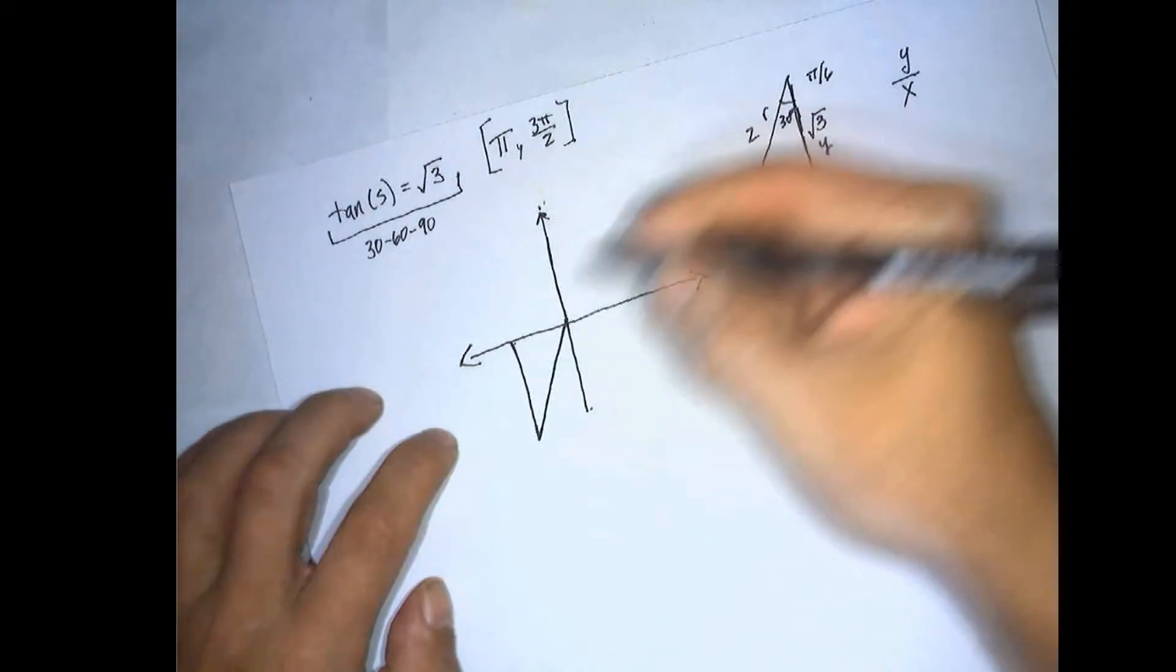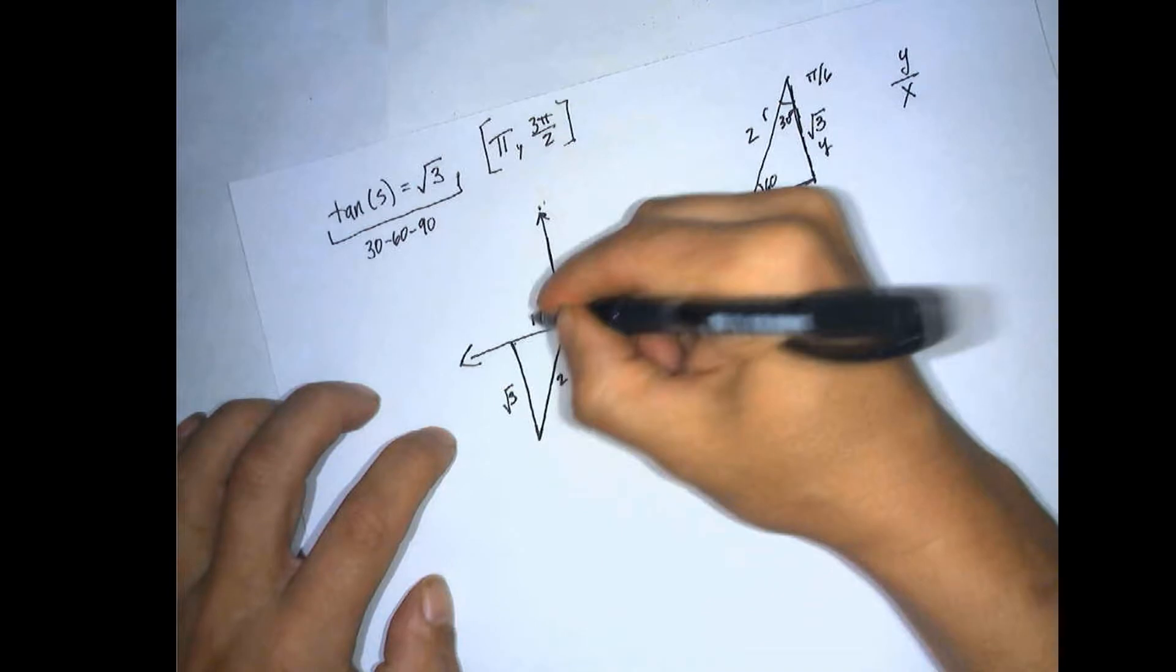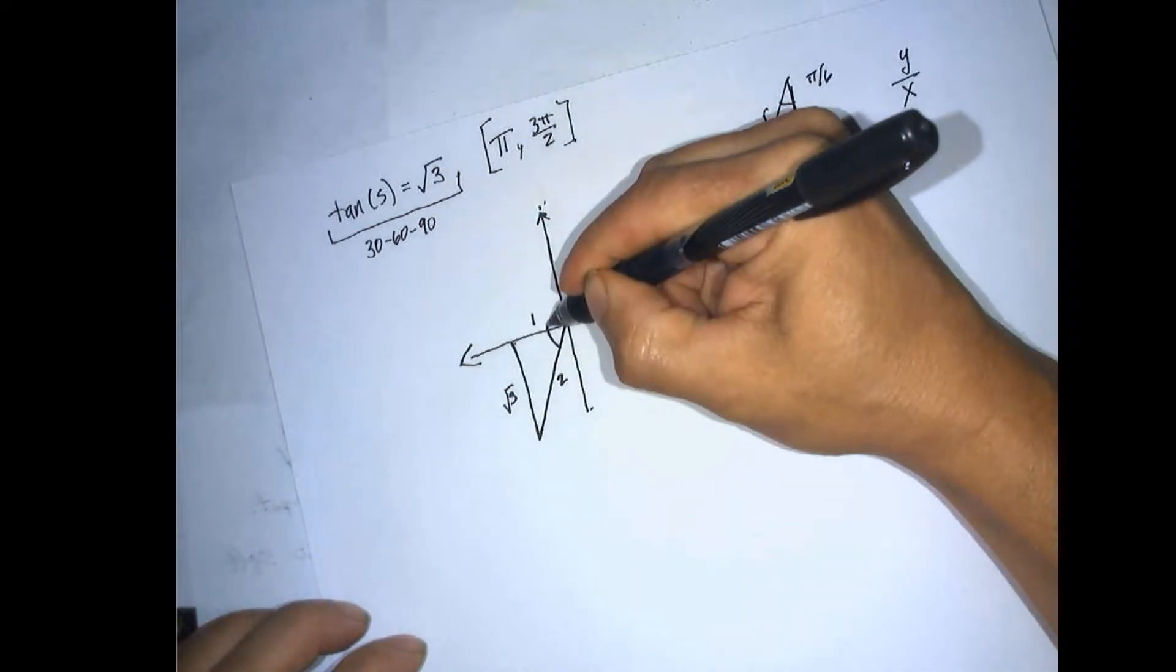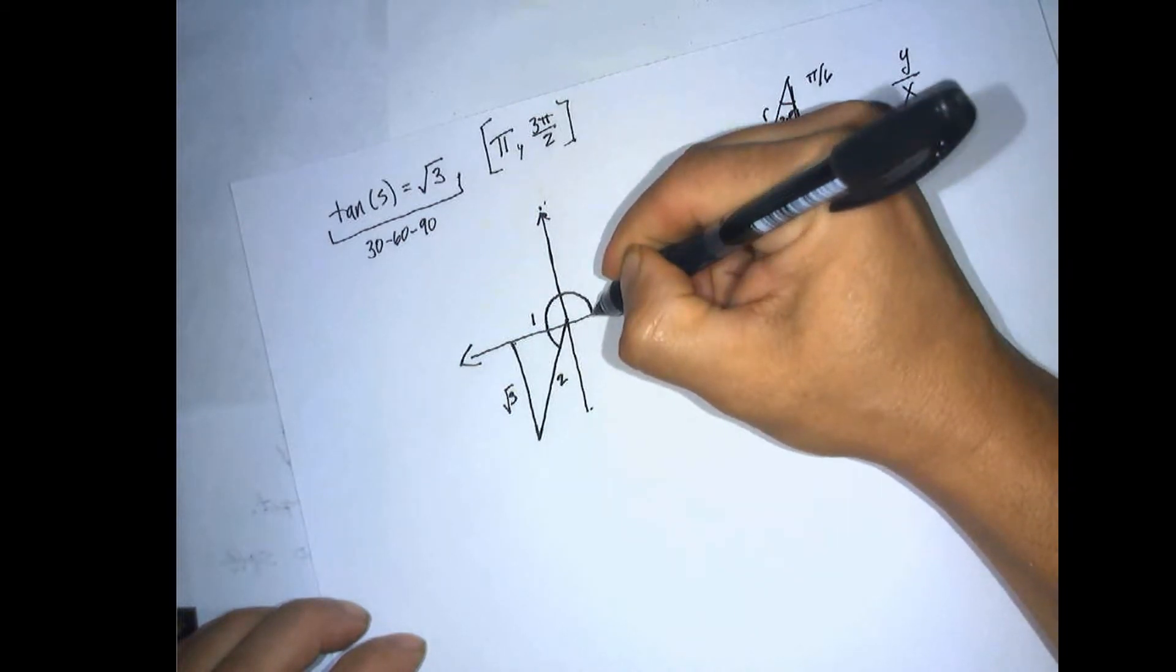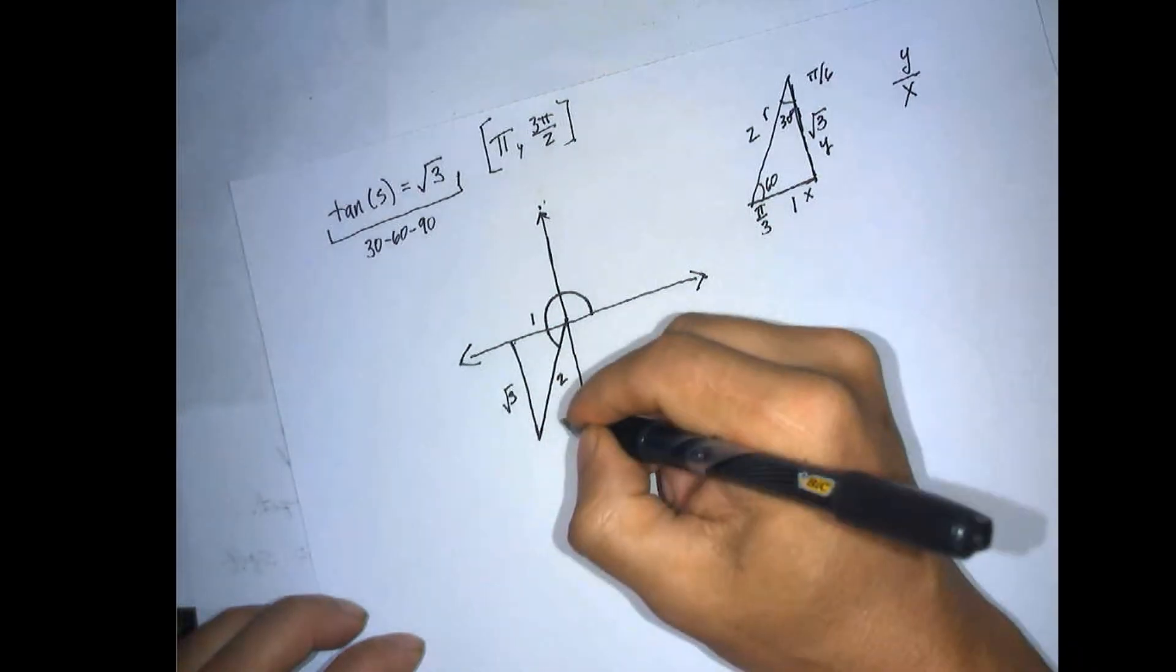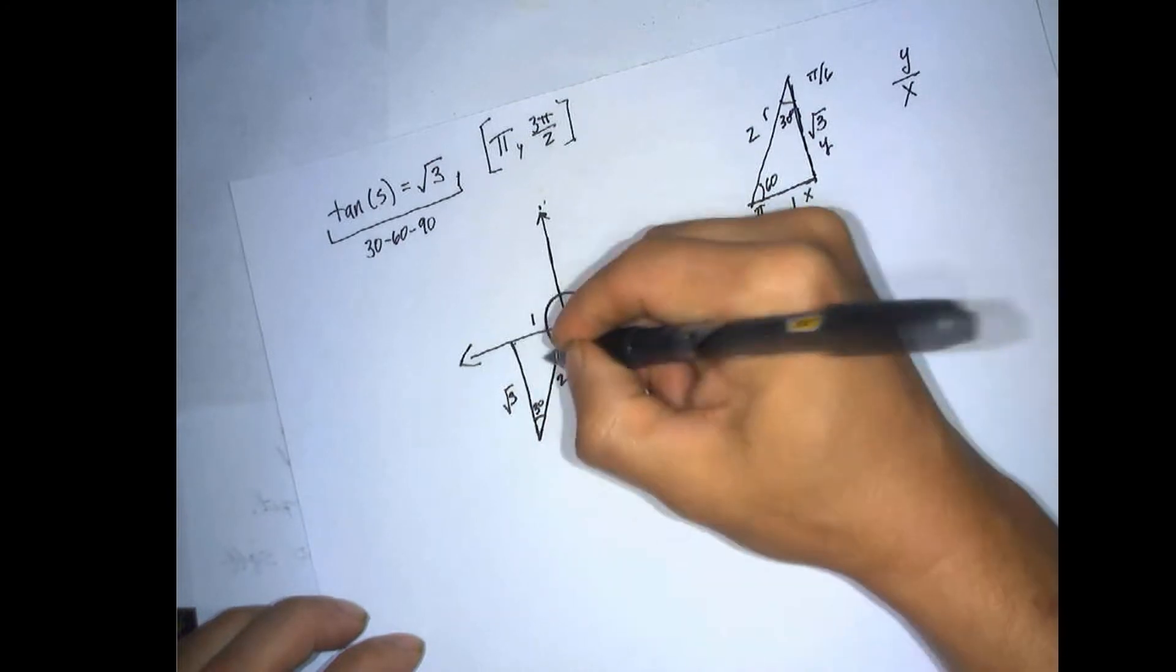And this is the square root of 3. This is 2, and this is 1. So what we're looking for is this angle right here. So that means that this angle here is 30, and this one is 60.